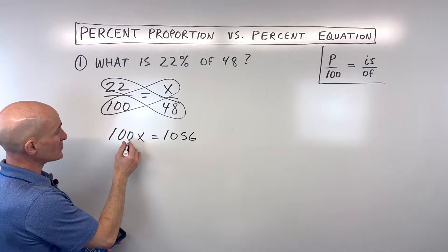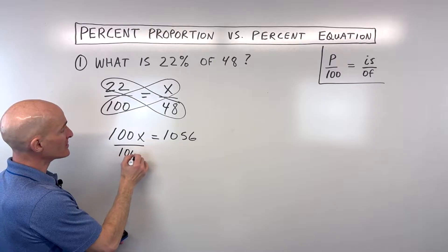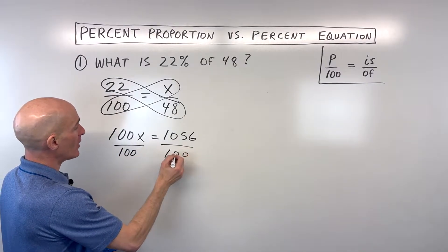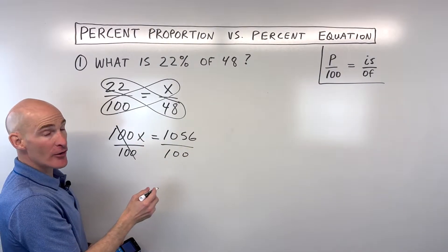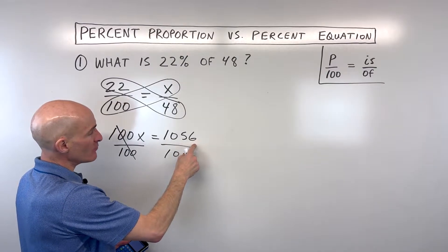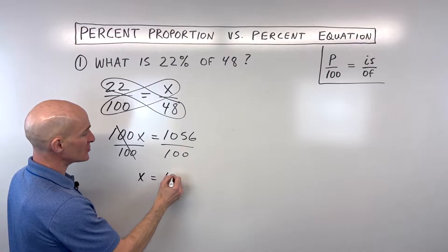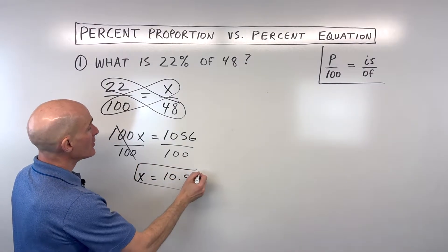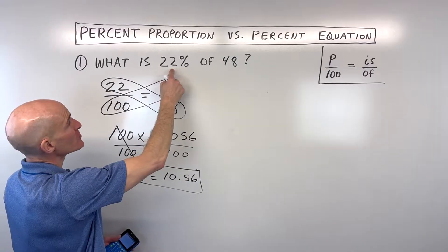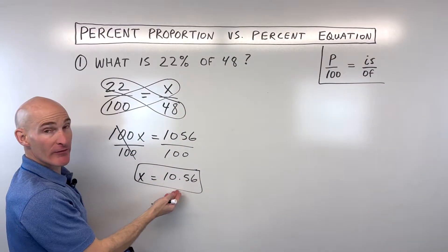Now we only want to solve for 1x, so instead of multiplying by 100, let's divide both sides by 100. When you divide by 100, that moves the decimal two places to the left. So that's going to be x equals 10.56. So what is 22% of 48? It's 10.56.